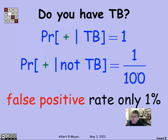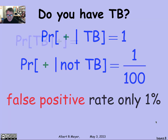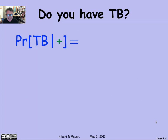This is what's called a false positive rate — it's falsely claiming that you have TB when you really don't. That rate, we're hypothesizing, is only 1%. What we're trying to calculate is the probability that you have TB given that the test came in positive and said you had TB.